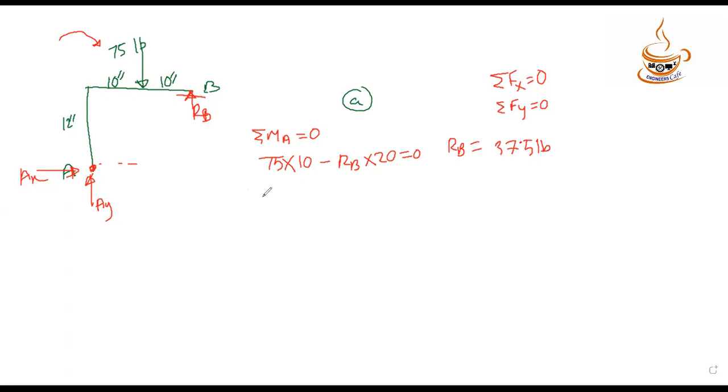Now using summation of Fy equals zero. Ay is upward, RB is upward, and 75 is downward. So Ay plus RB equals 75. We get Ay equals 37.5 pounds.